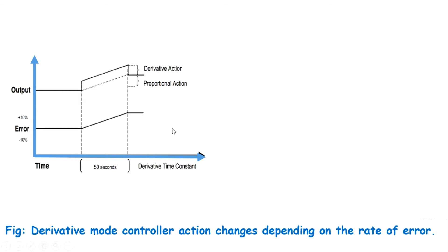In essence, it applies the brakes on the process error by quickly shifting the proportional band. Derivative has no effect on output if the error is not changing.